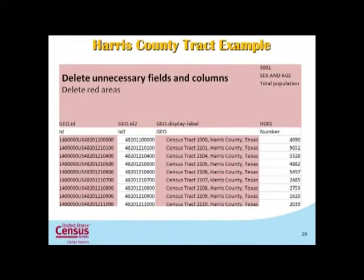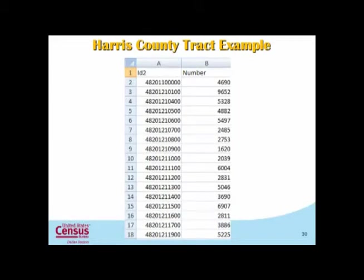I'm going to delete all the information in red. In order for my Excel file to be read in ArcMap, I need a field name for every field and I don't need all the other information. Just to keep this simple, we're going to focus on population. The far right-hand corner — the S001 field, sex and age, total population — that's the only variable we're going to be concerned with. So I'm going to delete the red areas. I don't need the first GeoID field, I don't need the geo name or the census tract — it doesn't really help us. Once I do that, I'm left with the ID2 field and a number field which is the population.